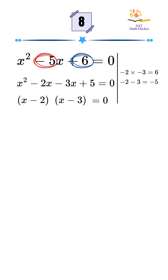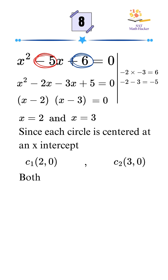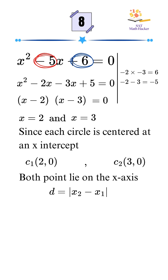This gives us x equals 2 and x equals 3, the x-intercepts. Since each circle is centered at an x-intercept, the centers are at the points (2, 0) and (3, 0). Both points lie on the x-axis, so the distance can be found by taking the absolute difference of their x values: 3 minus 2 equals 1.